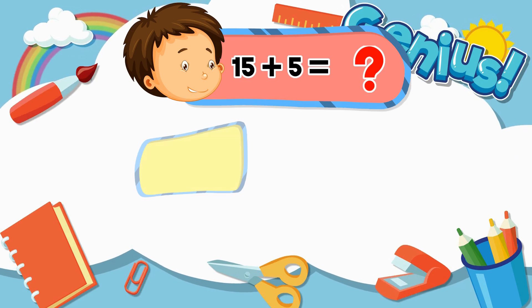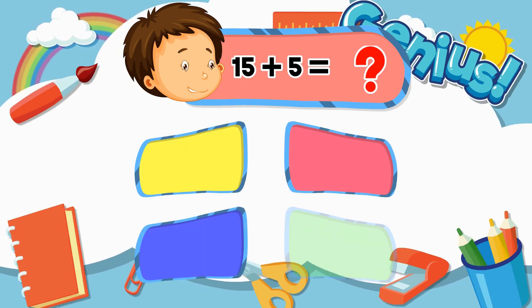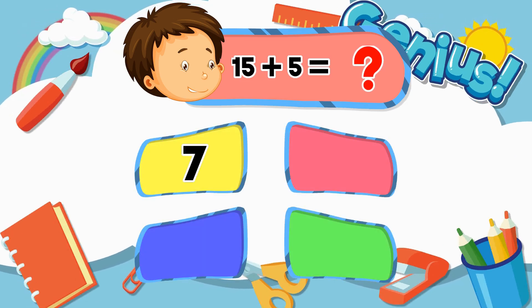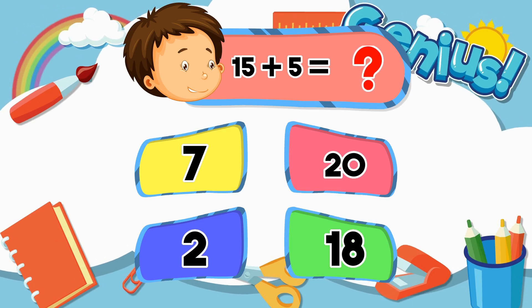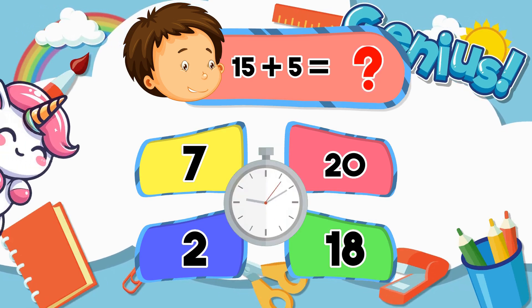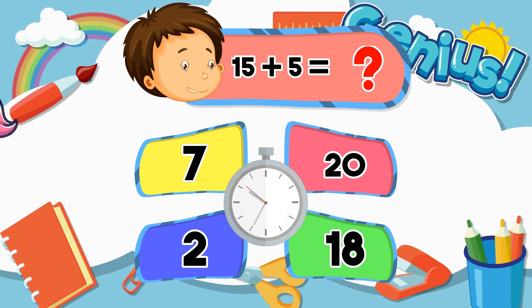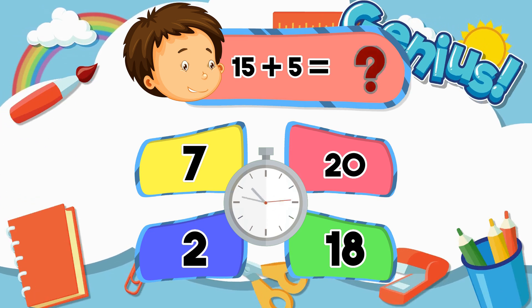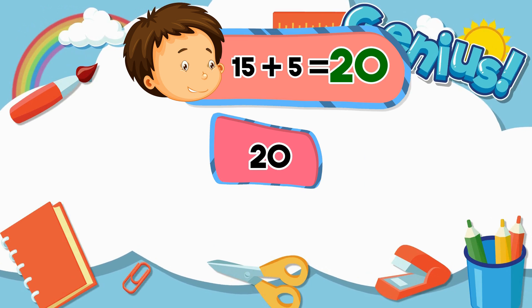What is 15 plus 5? Seven. Twenty. Two. Eighteen. Correct answer: 20.